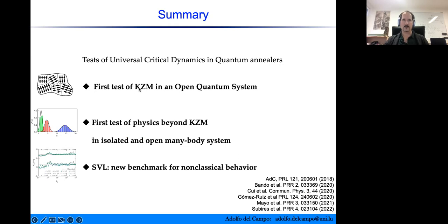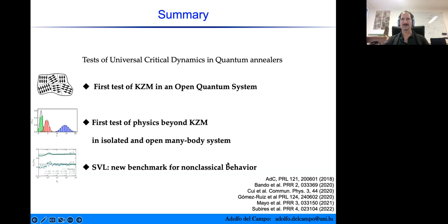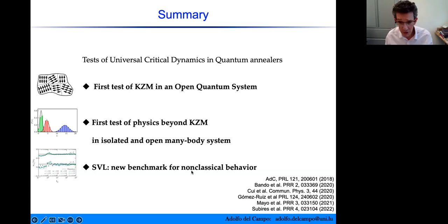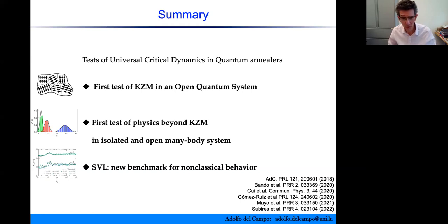In summary, we have provided the first test of the Kibble-Zurek mechanism in an open quantum system and also the first test of physics beyond the Kibble-Zurek mechanism. In doing so, we introduced the spin vector Langevin model as a new classical benchmark — complementary to and broader than the spin vector Monte Carlo model — to help rule out classical performance.